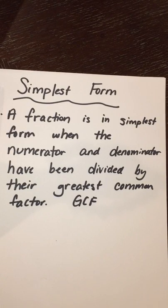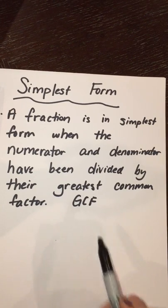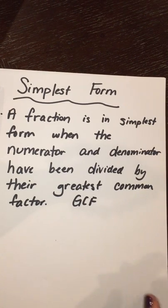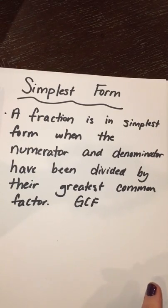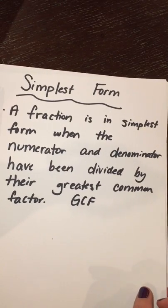Today we're going to be talking about putting fractions into simplest form. So a fraction is in simplest form when the numerator and denominator have been divided by their greatest common factor, which is the GCF in abbreviated terms. The GCF, the greatest common factor, is something that we've already done, and so that skill will help you with creating simplest form.